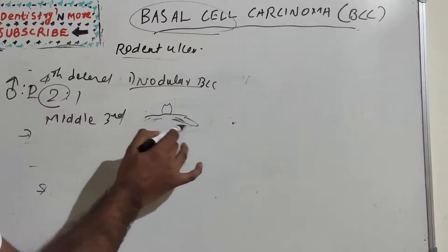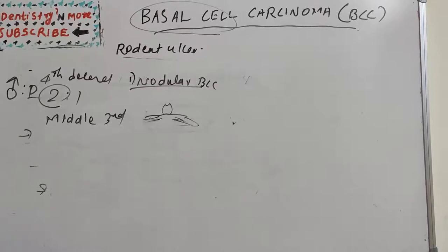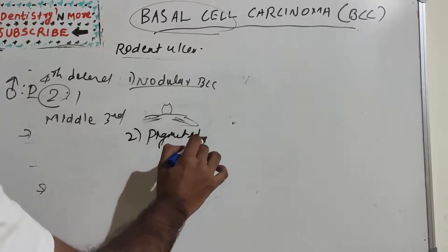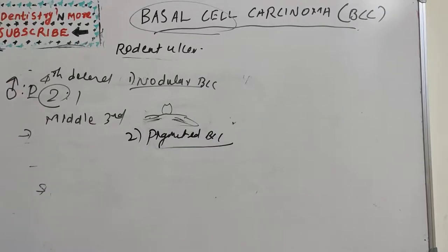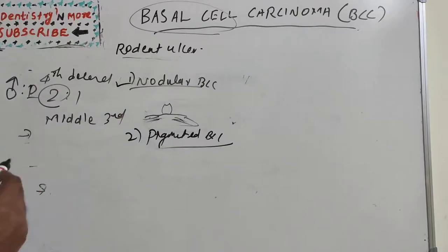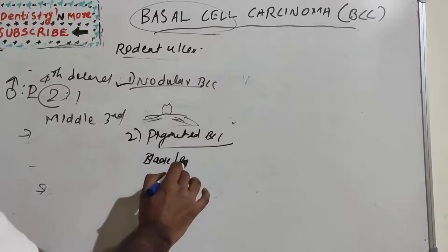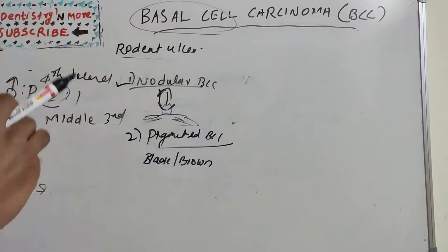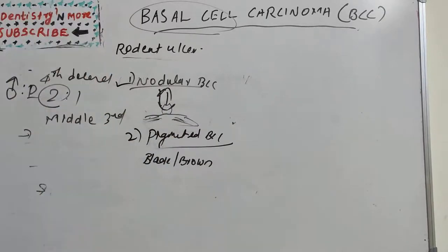The second subtype is pigmented basal cell carcinoma. In addition to the features seen in the nodular type — papule with central depression, ulceration, and lateral spreading beneath the epithelium — this type contains black or brown pigmentation. It is more commonly seen in dark-skinned people.